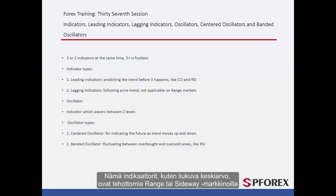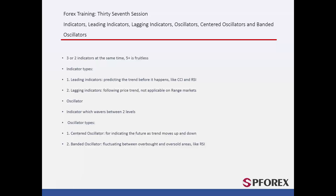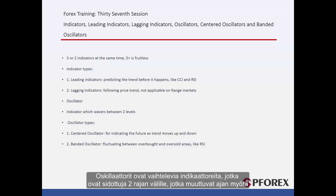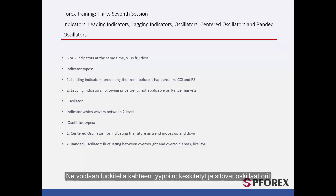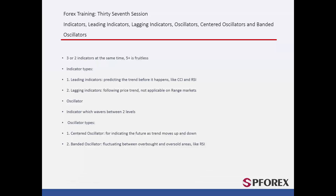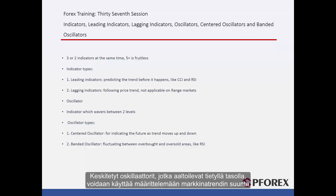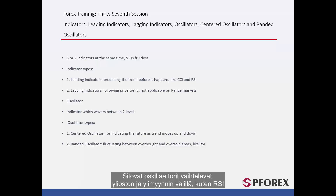Indicators like moving average are ineffective on range or sideways markets. Oscillators are indicators with a fluctuating manner, which are bound between two boundaries that change as time passes. They can be categorized into two types: centred and banded oscillators. Centred oscillators, which waver on a certain level, can be used to determine the direction of a market trend. Banded oscillators fluctuate between overbought and oversold regions, such as RSI.